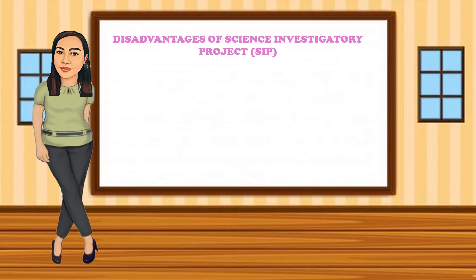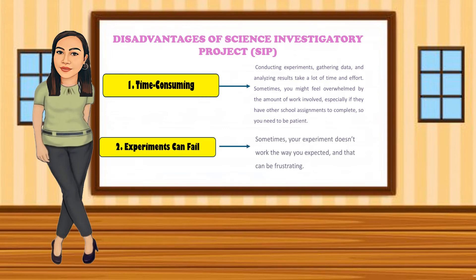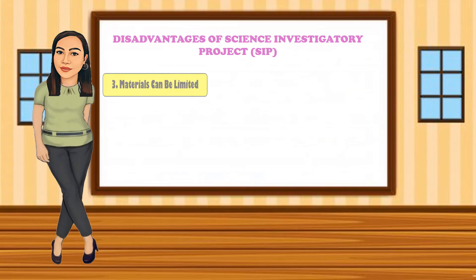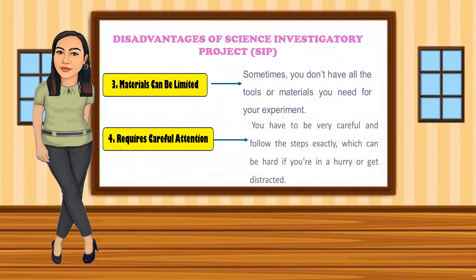The disadvantages of Science Investigatory Projects include: First, SIPs can be quite time-consuming — conducting experiments, gathering data, and analysing results take a lot of time and effort, and students might feel overwhelmed. So you need to be patient. Second, experiments can fail — sometimes your experiment doesn't work the way you expected, which can be frustrating. Third, materials can be limited — you may not have all the tools or materials you need. Lastly, experiments require careful attention — you must follow the steps exactly, which can be hard if you're in a hurry or get distracted.